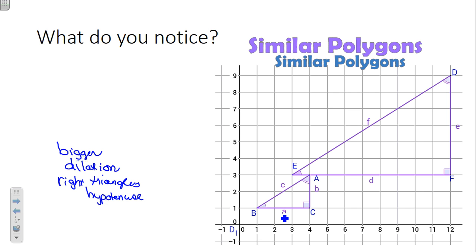When you said dilation, that meant that the angle measures have to be the same, but the side lengths have to be different. Lots of great stuff going on there. So, let's elaborate on that.